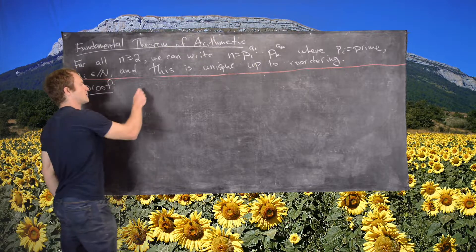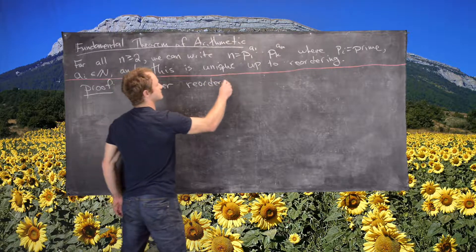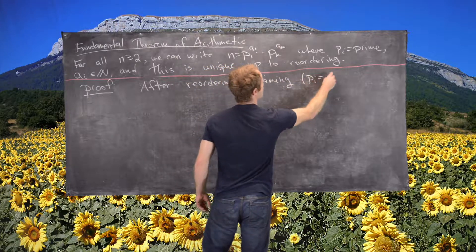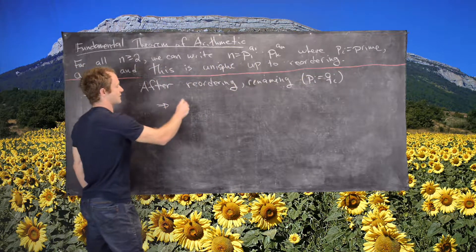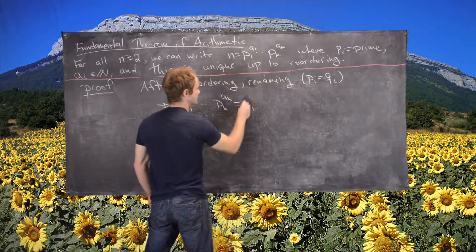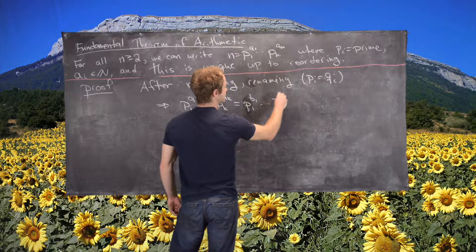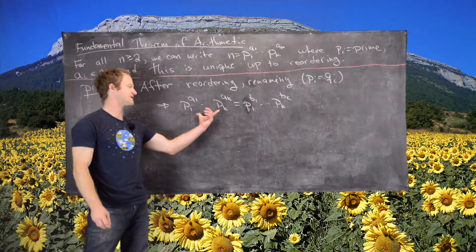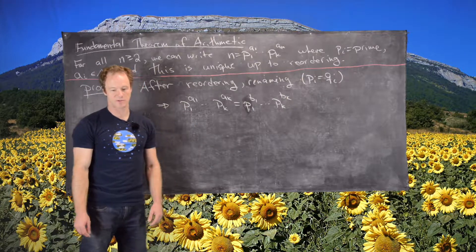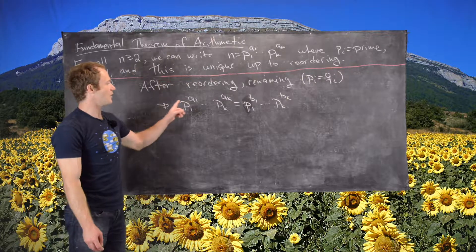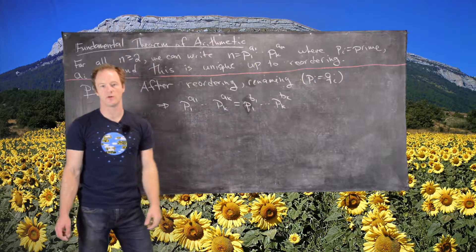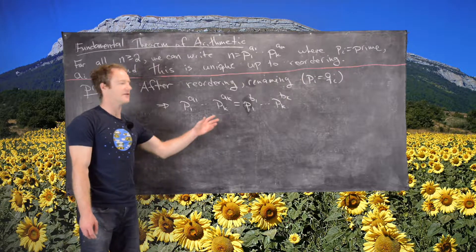After some reordering and renaming, we can set pi equal to qi. That tells us p1^a1 · ... · pk^ak = p1^b1 · ... · pk^bk. Recall that previously we showed there are the same number of primes on either side and they are the same primes, now placed in the same order. So we have two cases: either a1 = b1, a2 = b2, all the way up to ak = bk — in which case we're done — or there's one that's different.